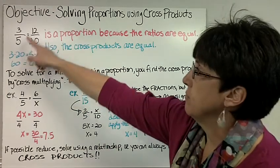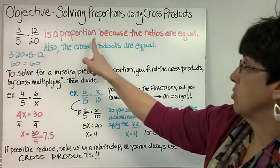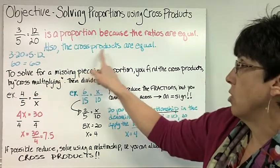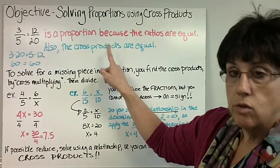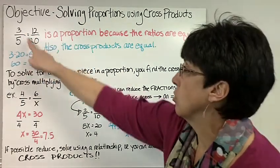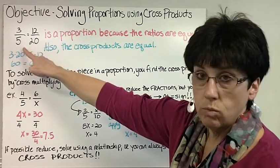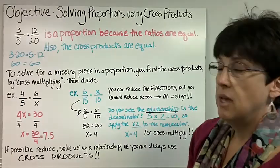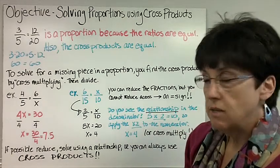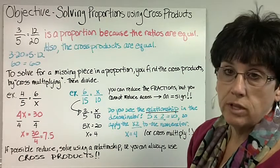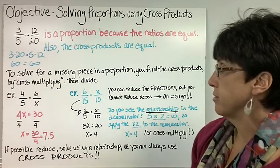So 3 is to 5 as 12 is to 20 is a proportion because the ratios are equal. Also, the cross products are equal. The cross products are what you get when you multiply diagonally across an equal sign. So 3 times 20 equals 5 times 12 because 60 equals 60. And this is how you would check to see if you had four numbers written like this, to see if it was a proportion. You find the cross products, and if they're not equal, it's not a proportion.